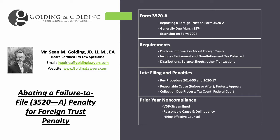Unlike the FBAR and the Form 8938, the Form 3520-A is a little bit more complicated. It's used to report ownership primarily of a foreign trust. Most of the time, it's due March 15th. When you want to apply for an extension of the form, you would file a Form 7004, which is also used to extend business returns like 1120S and things like that, not your typical 4868.